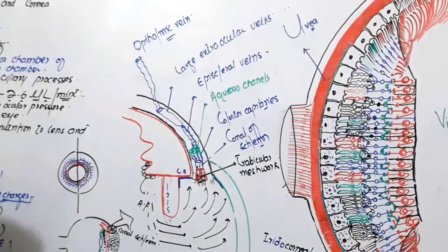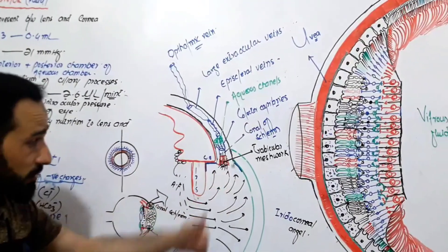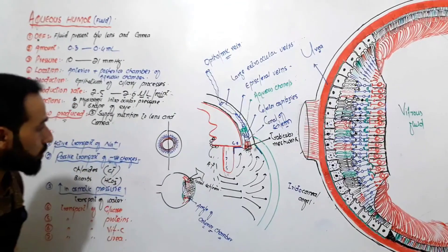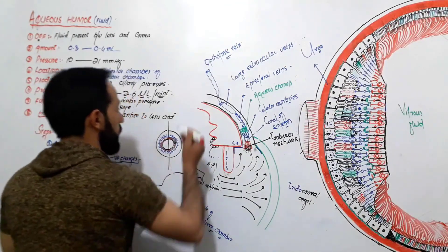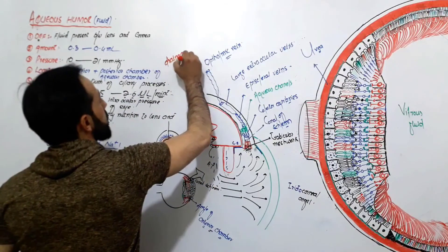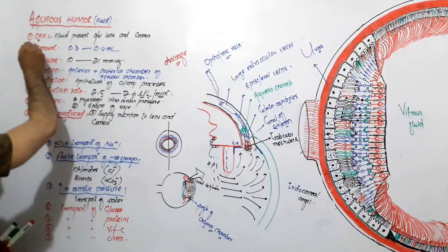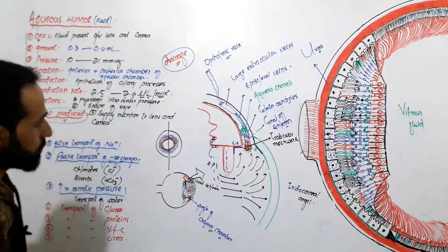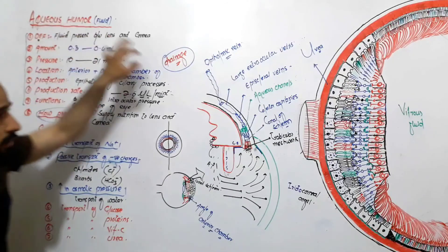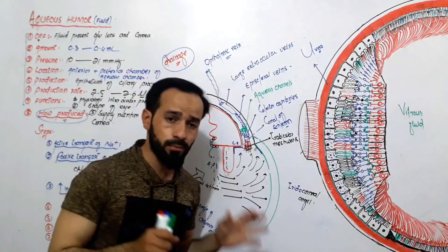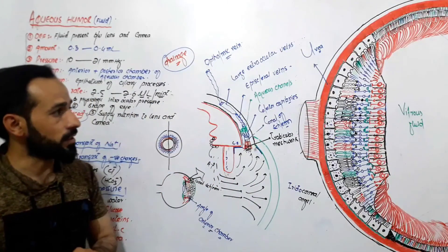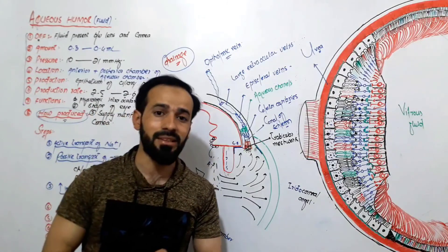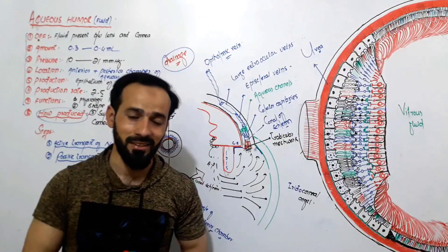I hope you understood the drainage of the aqueous fluid and its production, which was covered in the previous lecture. This was the end of the lecture regarding the aqueous humor — covering how it is produced and how it is drained. In the next lecture, we will discuss the blood supply of the eye and then finish with the eye topic. See you in the next lecture, thank you.